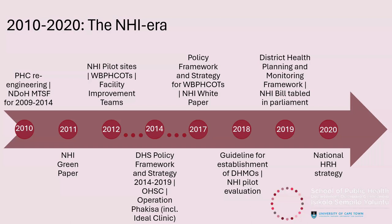In 2014, the district health policy framework and strategy for 2014 to 2019 was published with goals including improving district governance, leadership, and management. The Office of Health Standards Compliance was established, and Operation Phakisa including the Ideal Clinic Initiative kicked off. This was really a period where there was a lot of activity around trying to strengthen the district health system in preparation for NHI. In 2017, a policy framework for ward-based primary healthcare outreach teams was published along with the NHI White Paper, with a real focus on the sub-district level where the CUPs operate.